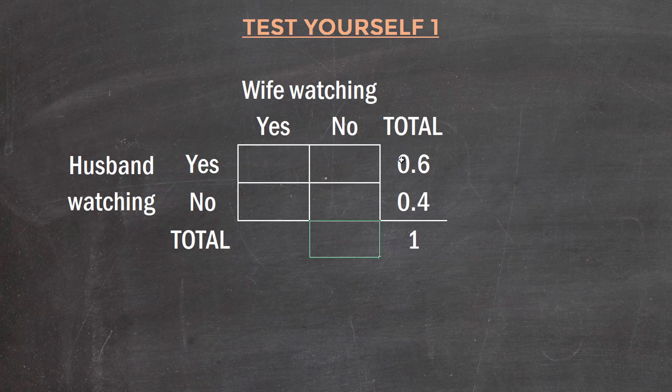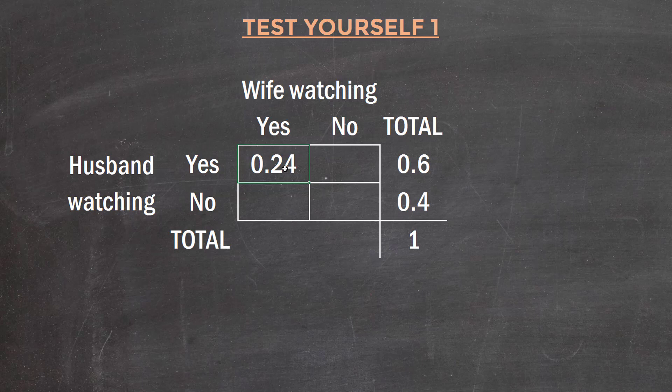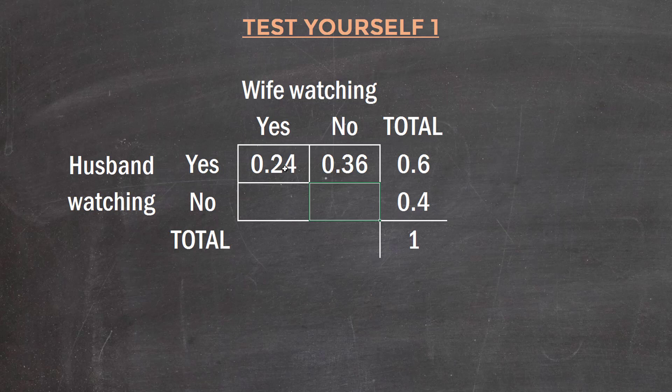It then says that when the husband is watching HBO, 40% of that time the wife is also watching. So of this 0.6 or 60%, 40% of that time is when the wife is watching as well. This joint probability is 0.4 times 0.6, which equals 0.24, meaning this cell is 0.36.